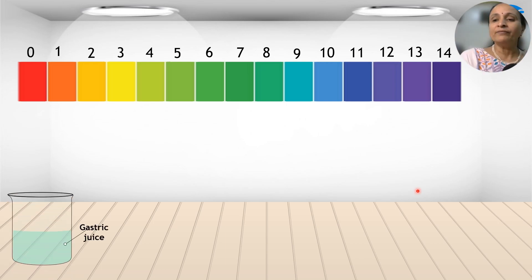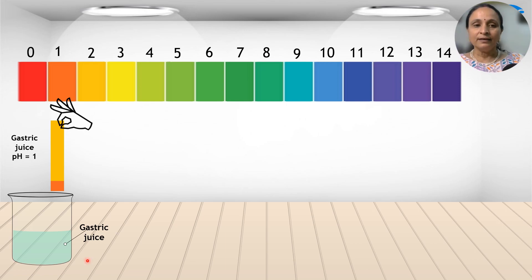For example, if you have the gastric juices, the juices which you get inside the stomach, and you take a universal indicator paper in the laboratory, dip it into this gastric solution, the color of this paper is changing. Go compare with the colors which is there on the top. You can see exactly this color matches with this color. So the gastric juices is having a pH of 1.